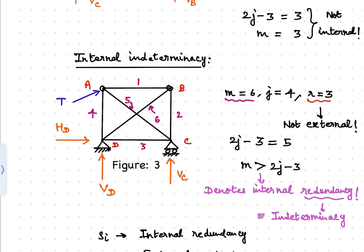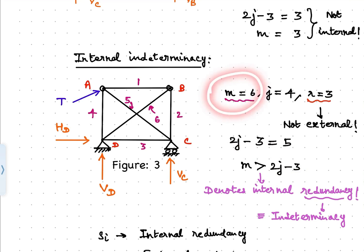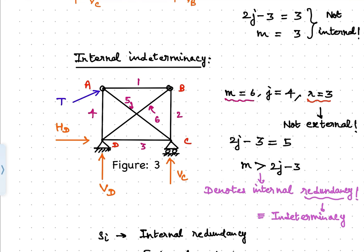The next problem in Figure 3 is meant to demonstrate internal indeterminacy. Here R is just 3, so there is no external indeterminacy. We have 2J minus 3 equal to 5, but the number of members equals 6. So M is greater than 2J minus 3 by 1, meaning there is internal indeterminacy due to the presence of one redundant member. Overall static indeterminacy is 1, but it is due to one excess member — unlike the previous problem. Removal of member 5 or member 6 would still keep everything stable.